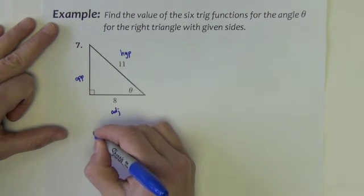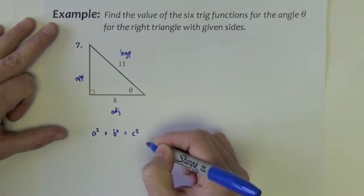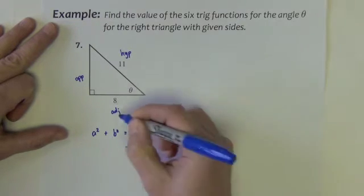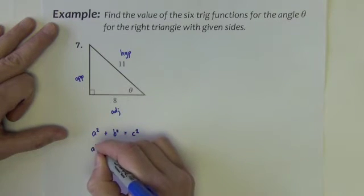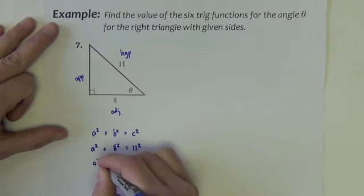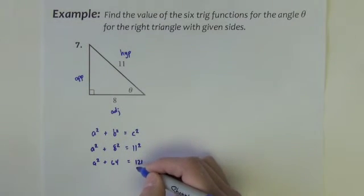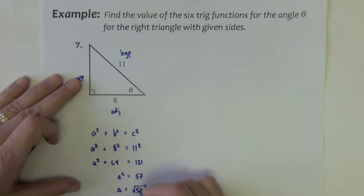And to do that, we're going to use Pythagorean's Theorem. The a squared plus b squared equals c squared. The 11 is the c because it's the hypotenuse. The other two can be the a or the b respectively. It doesn't matter. So maybe I'm looking for the a. I have the b. And we solve this. So we get a squared plus 64 equals 121. I need 121 minus 64. So a squared is 57. So a is the square root of 57.